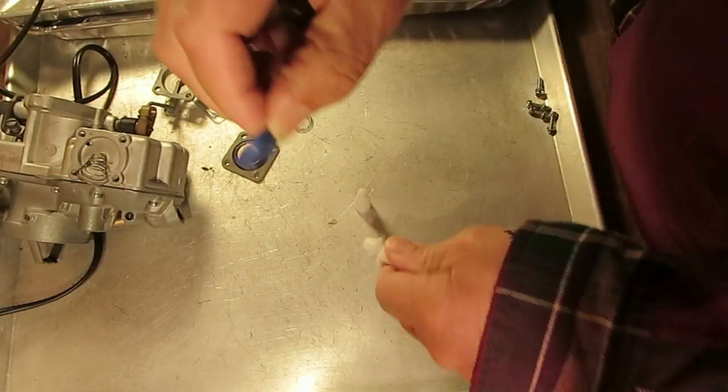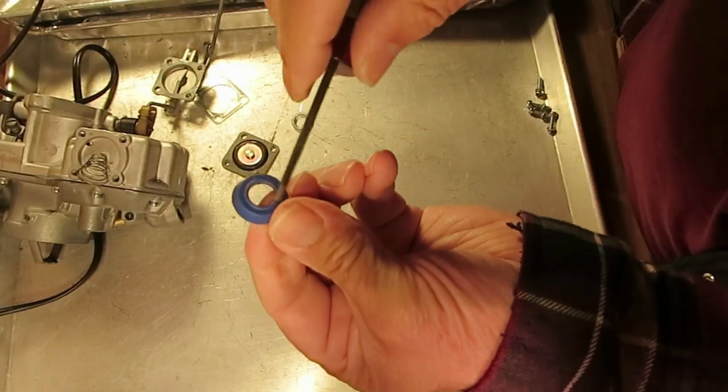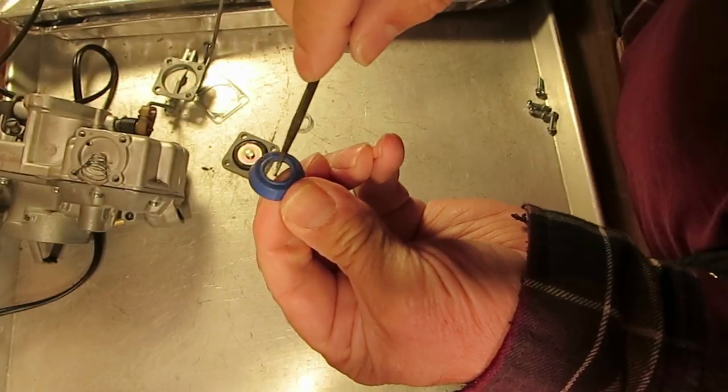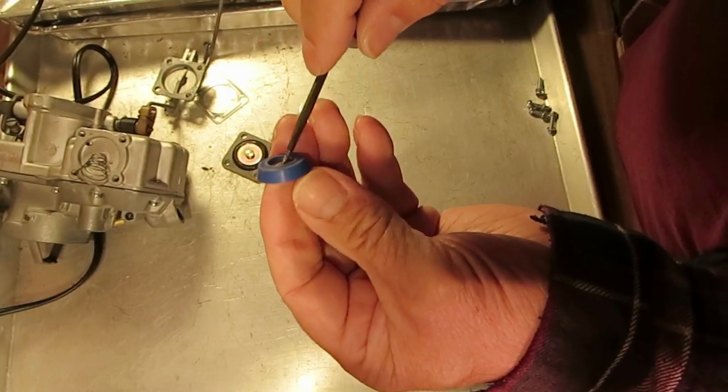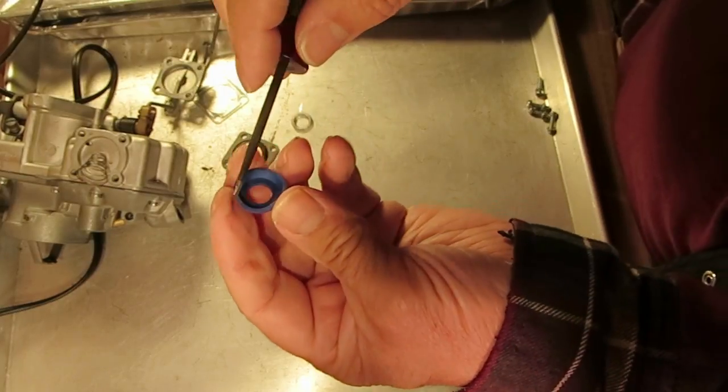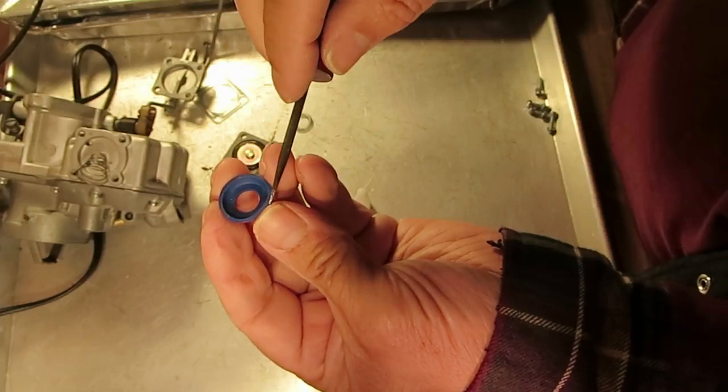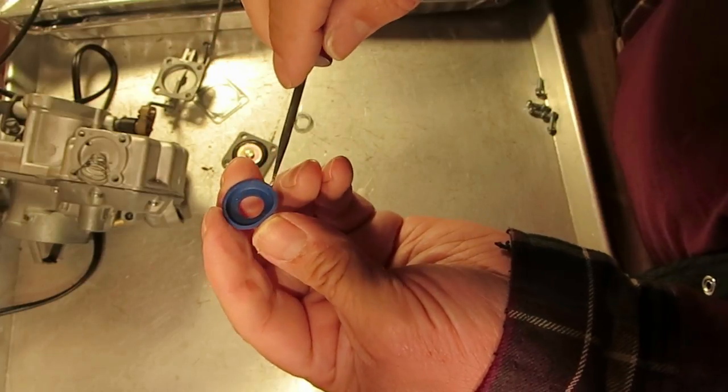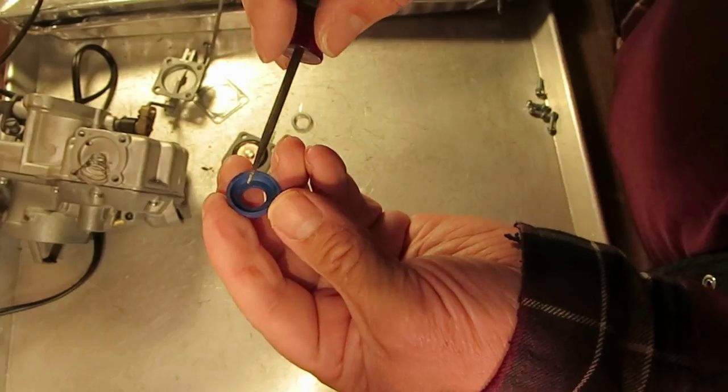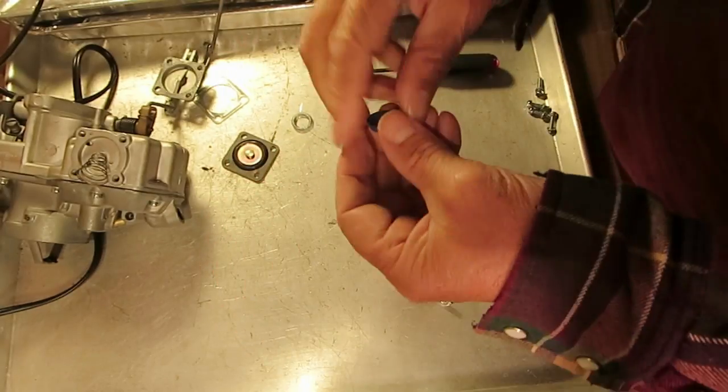When you go to replace the cup, be sure you match up this diameter in here and that's measured in thousandths and then in inches you measure the diameter of the cup. Okay, it'll either be on a two jet 21/32nd or a three quarters.